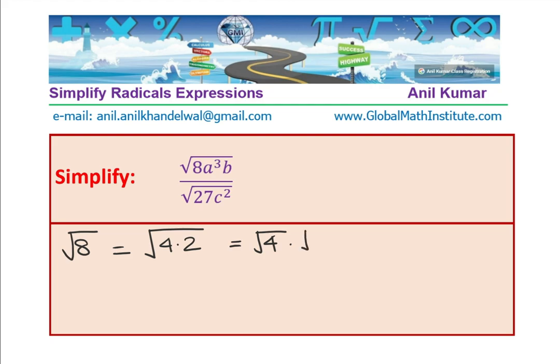And square root of 2 will remain as such and therefore, I could write this as 2√2. Make sense? So, this is broken down to the simplest form to give you an idea how square root of 8 can be written and that is equal to 2√2.